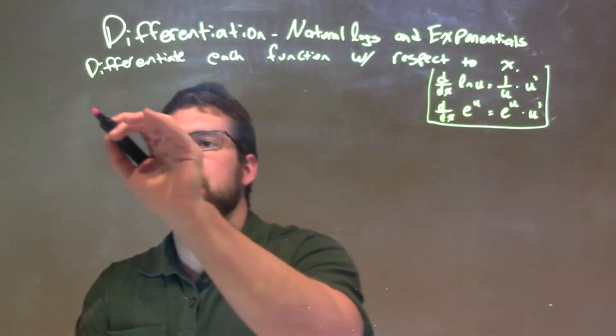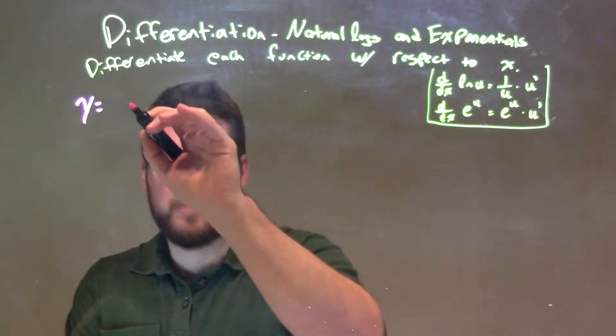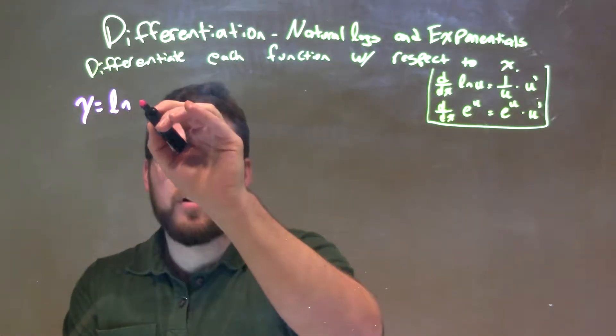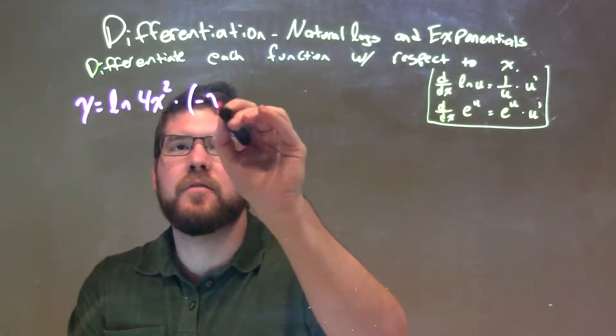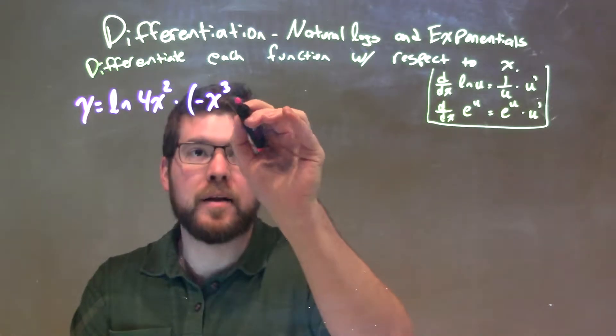If I was given this function, y equals the natural log of 4x squared times, parentheses here, negative x to the third minus 4.